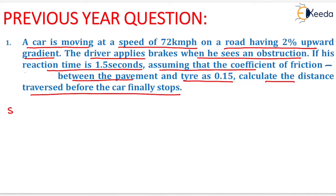It means that we need to calculate here the stopping sight distance. So we know the formula of stopping sight distance. It will be equal to 0.278 V into TR plus 0.278 into V whole square upon 2G F plus S.